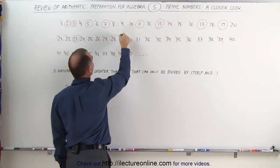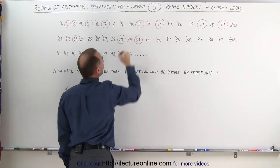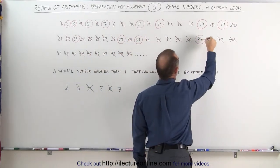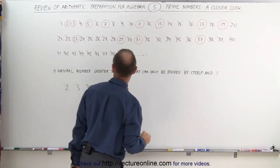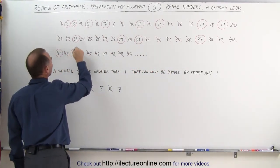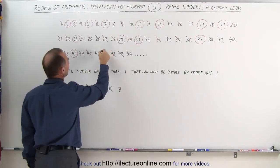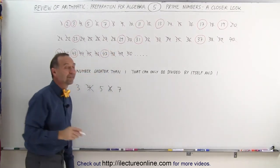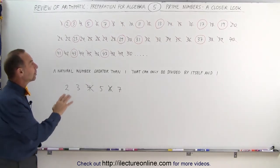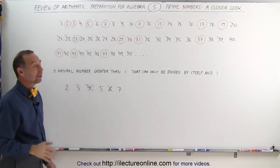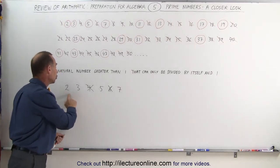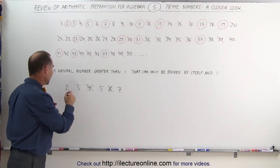29 is a prime number. 31 is a prime number. 37 cannot be divided by any number other than 1 and itself. 41 is a prime number. 43 is a prime number. And 47 is a prime number. So those are the prime numbers that are 50 or smaller. We found all prime numbers below 50 by seeing which numbers could be divided by any of the smaller prime numbers: 2, 3, 5, and 7.